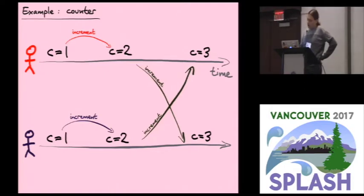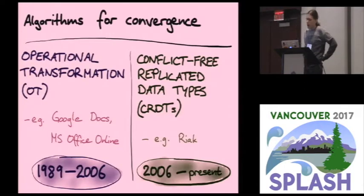There are, roughly speaking, at a high level, two families of algorithms that are used to achieve this kind of automatic merging and convergence. The first family is called operational transformation. That's been studied for a long time, since the 80s already. That is actually what Google Docs is based on. It uses one particular operational transformation algorithm.